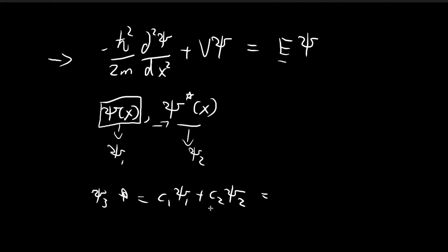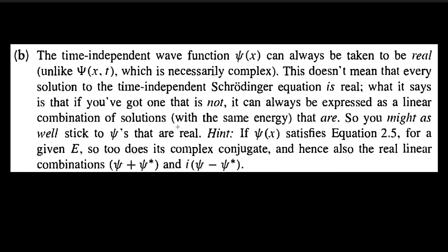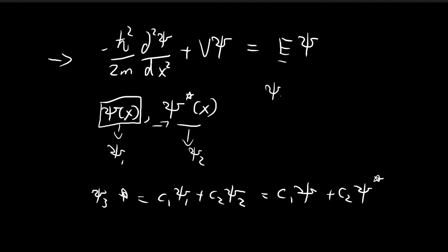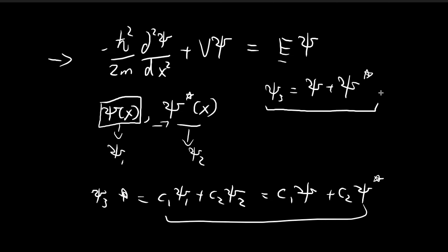Substituting the original ξ(x) and its conjugate ξ*(x) into our linear combination result, we know this must also be a solution. We are free to choose c₁ and c₂, and the problem suggests choosing c₁ = c₂ = 1. So ξ₃ = ξ(x) + ξ*(x), which is also a solution. Adding a function to its conjugate causes the imaginary parts to cancel out, so this entire expression is entirely real — there are no imaginary components. For energy level E, we have constructed a solution with only a real part.